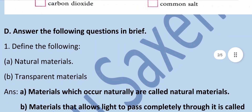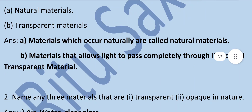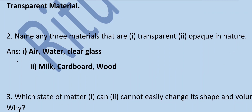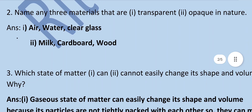Define the following: Natural materials — materials which occur naturally are called natural materials. Transparent materials — materials that allow light to pass completely through them are called transparent materials. Name three transparent and three opaque materials: Air, water, and clear glass are transparent, whereas milk, cardboard, and wood are opaque materials.